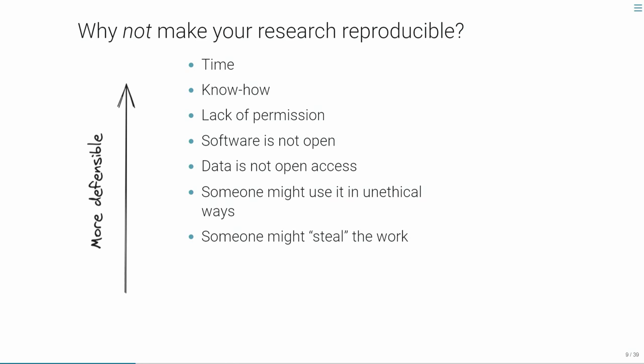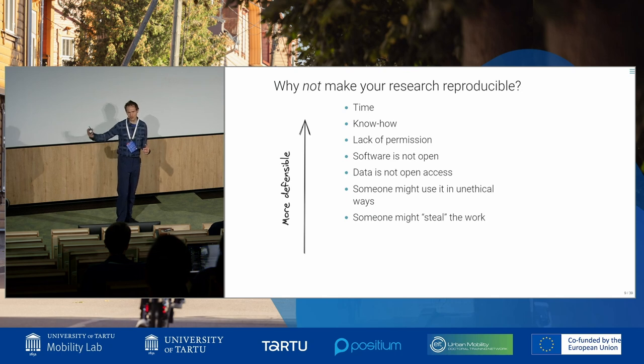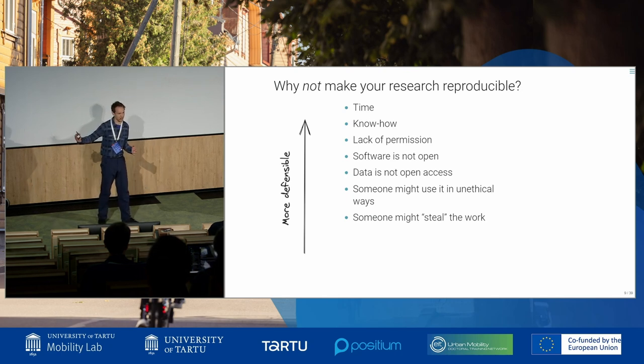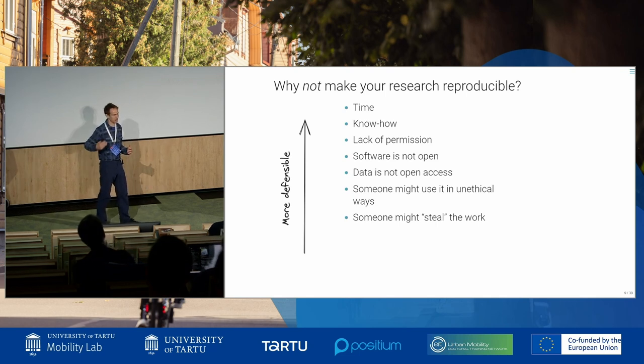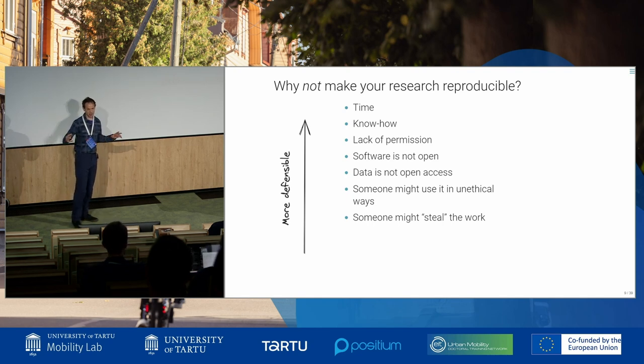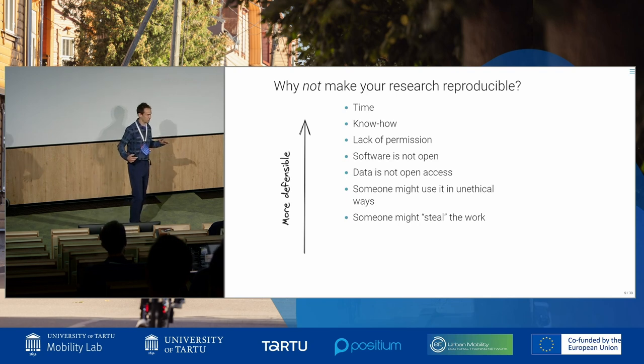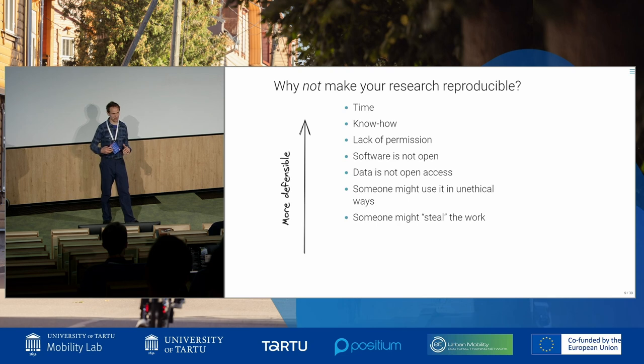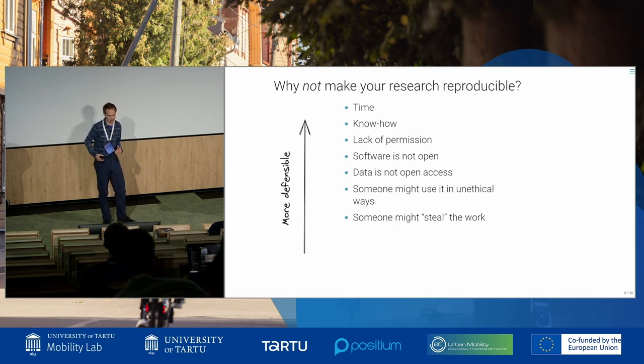Know-how is a really good one. GitHub and version control is somewhat the domain of software engineering, and none of us have been trained in that. But that know-how is available everywhere online, and from what I've seen of the practical sessions at the PhD school here, there's been a lot of knowledge sharing. Lack of permission is also very legitimate — if you work for an organization without an open culture, they can actually prevent you from publishing your work. I've seen that both in government and especially in industry, where the majority of people doing good work cannot publish because of their contract.